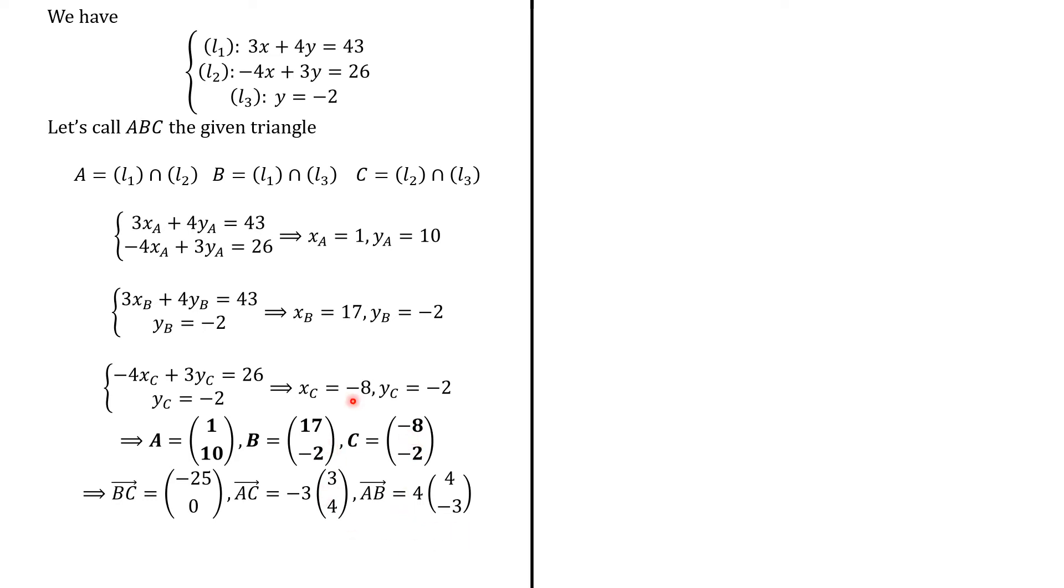What is interesting is that those vectors 3, 4, and 4 minus 3 have the same length, which is 5, because we know these classical right triangles whose sides have length 3, 4, and 5.